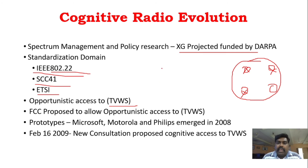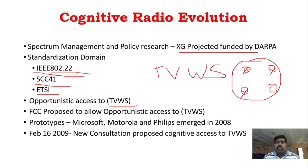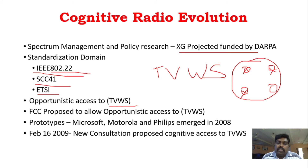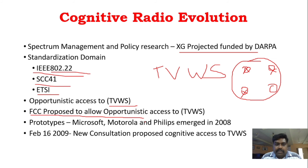The spectrum holes are known as white spaces. On the TV broadcasting spectrum, there are white spaces that were used in the first research. The FCC proposed to allow opportunistic access to TV white spaces (TVWS) and gave authorization for this.